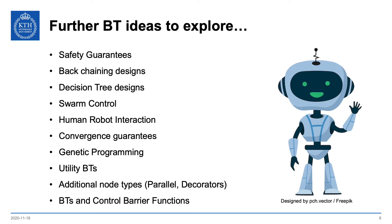There are a bunch of further ideas in behavior trees that you might want to explore, such as safety guarantees using behavior trees, back chaining designs, decision trees, swarm control, human-robot interaction, convergence guarantees for behavior trees, genetic programming, utility behavior trees, additional node types such as the parallel or decorators, delays, and combination of behavior trees and control barrier functions. Lots of stuff to explore.